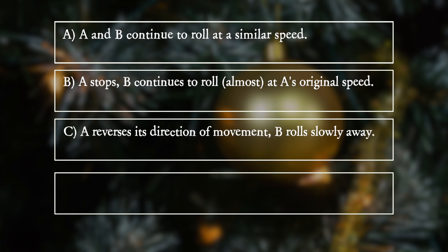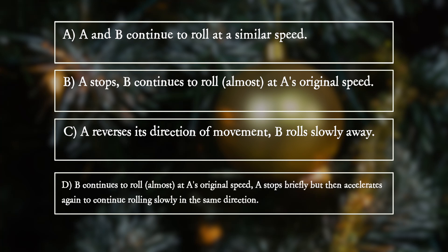Option C: A reverses its direction of movement, B rolls slowly away. Option D: B continues to roll almost at A's original speed. A stops briefly but then accelerates again to continue rolling slowly in the same direction.